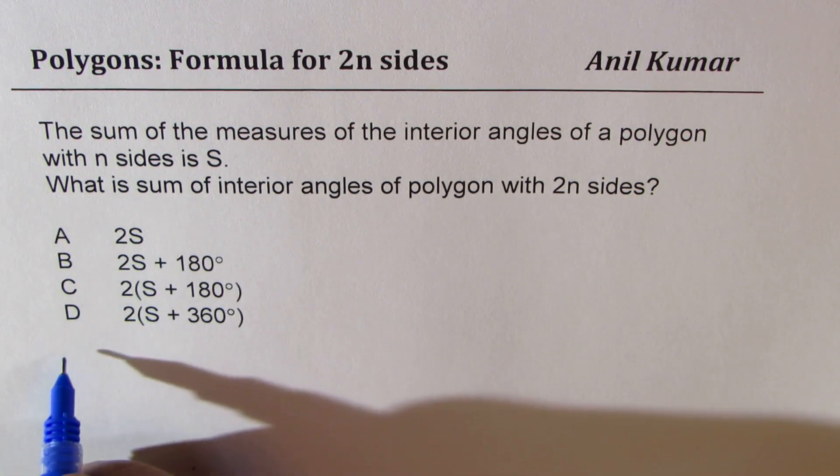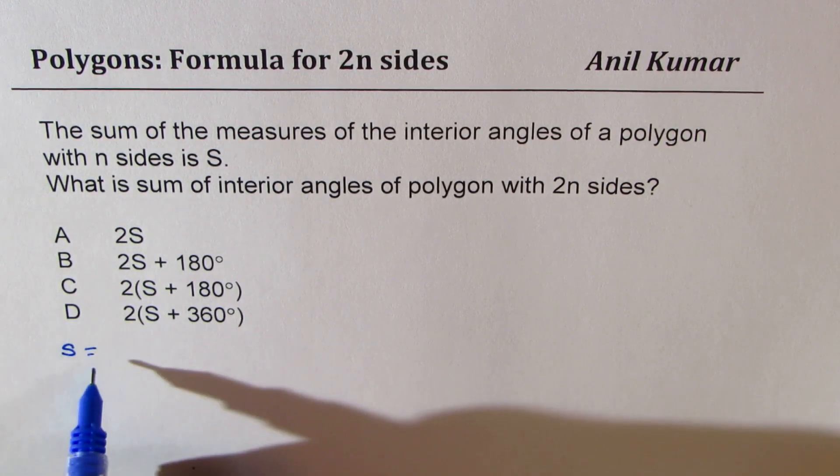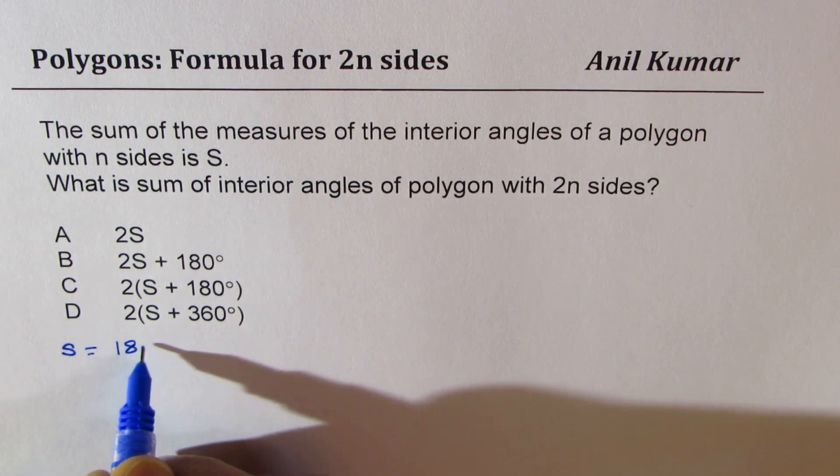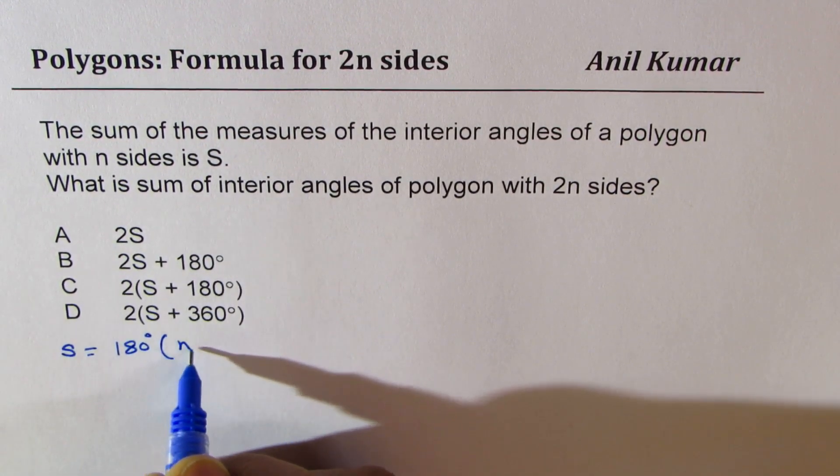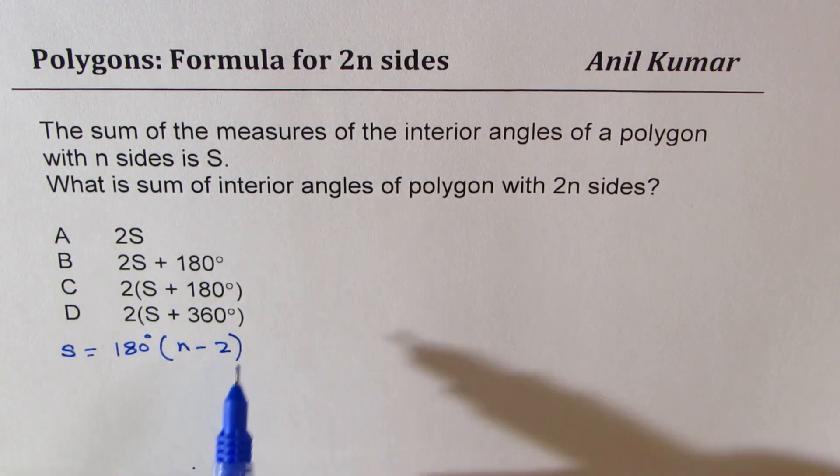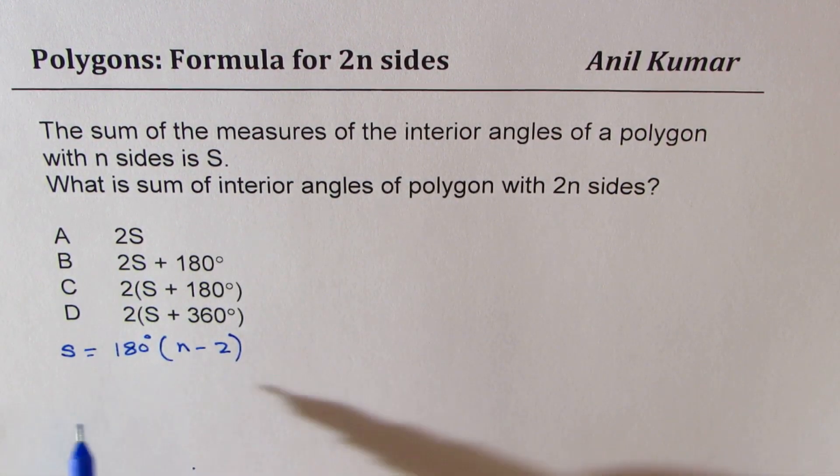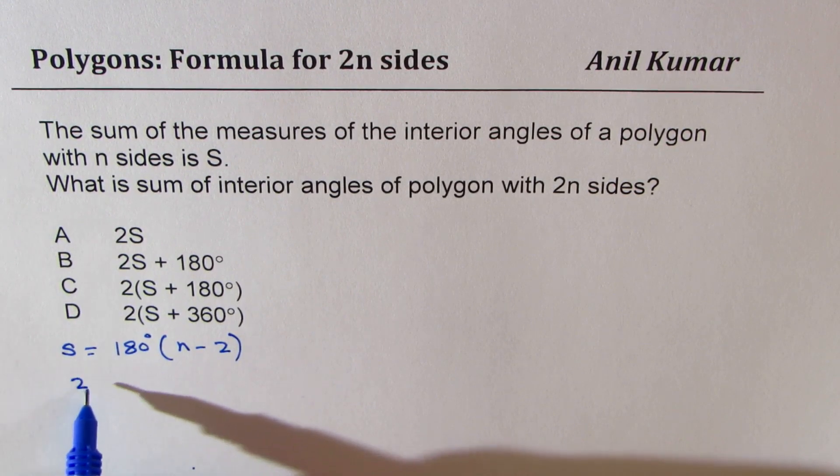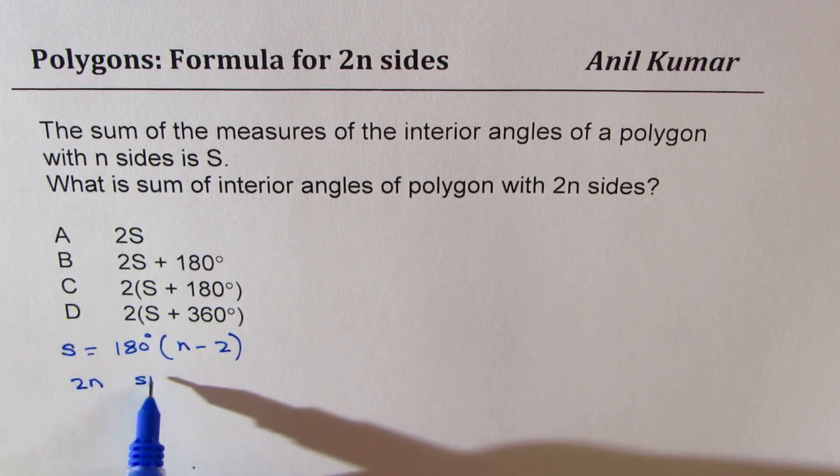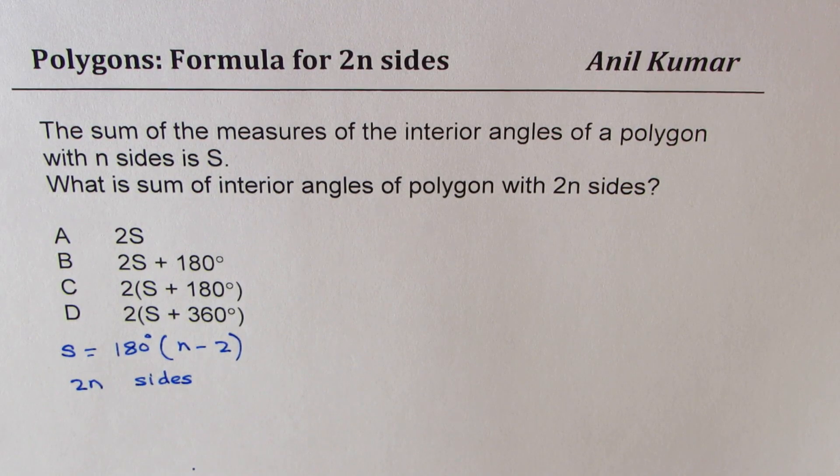So as you know, S basically, sum of interior angles is 180 degrees times n minus 2. You need to find the formula when the sides are 2n, right? So when we have 2n sides, that is the question for you.